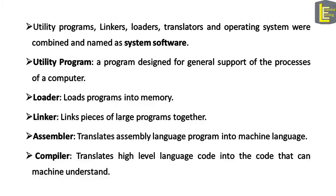Utility programs, linkers, loaders, translators, and the operating system were combined and named as system software. Utility programs are programs designed for general support of the processes of a computer. A loader's job is to load programs into memory, and a linker links pieces of large programs together. An assembler translates assembly language programs into machine language, and a compiler translates high-level language code into code that the machine can understand.